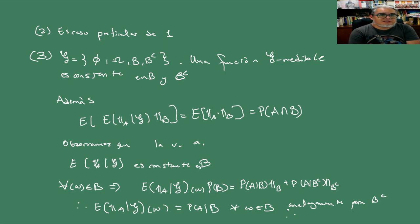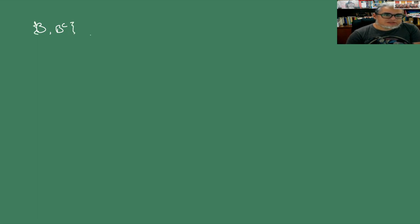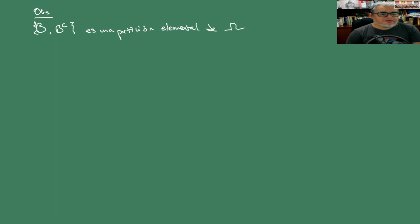Esta tercera propiedad lo que nos está diciendo en el fondo es que la sigma-álgebra G elegante está generada por una partición sencilla, la partición más sencilla del espacio Ω: agárrate cualquier conjunto, cualquier elemento de la sigma-álgebra, y agárrate el complemento, y eso te genera ya una partición del conjunto. Esta cosa es una partición elemental de Ω.